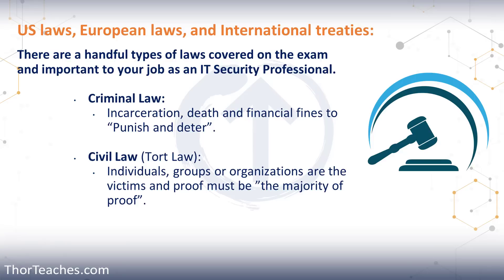Proof has to be beyond a reasonable doubt, and it is to punish and deter. That brings us to civil law — you may also hear it referred to as tort law. Here it's no longer society that's the victim; it can be individuals, groups, or organizations. In civil law, proof must be the majority of the proof — the preponderance of proof. It is more likely than not. The punishment is financial fines, and they're there to compensate the victim or victims.